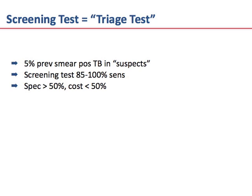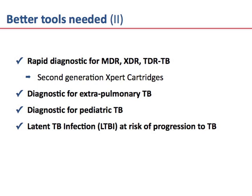We may ultimately have a screening test followed by a confirmatory test in TB, as in the past we depended on in HIV diagnostics. We needed a rapid diagnostic for drug-resistant tuberculosis, and second-generation GeneXpert cartridges are being studied with this in mind. We need a diagnostic for extra-pulmonary TB, pediatric TB, and patients with latent TB infection at risk of progression to active TB.